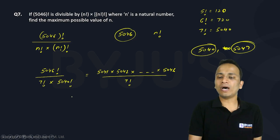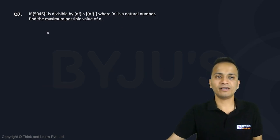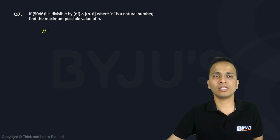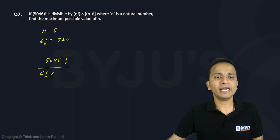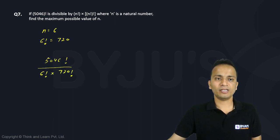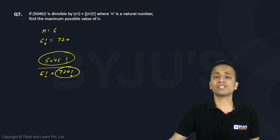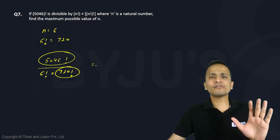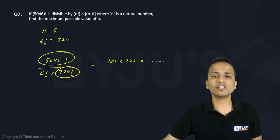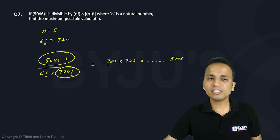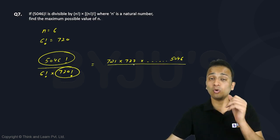Now let's take n = 6. So 6 factorial equals 720. We cancel terms between 5046 factorial and 720 factorial — everything up to 720 cancels — and we are left with 721 × 722 × 723 × ... × 5046 in the numerator. That gives us more than 4000 consecutive numbers remaining in the numerator.